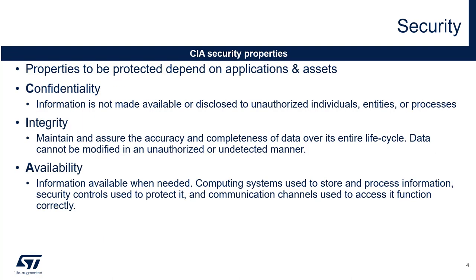To protect your asset, depending on that asset, you will protect different properties. We have the CIA: confidentiality, integrity, and availability. Confidentiality means the information is not made available to unauthorized individuals, entities, and processes — only people that are allowed have access to the asset. Integrity means you ensure your asset has not been modified in any manner. Availability means when you need the information, it is available.